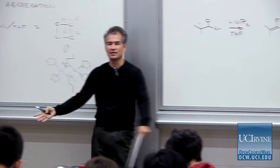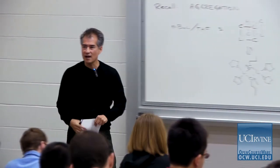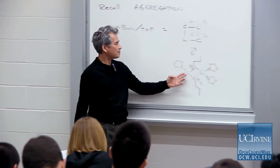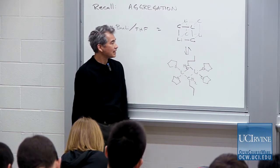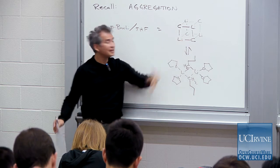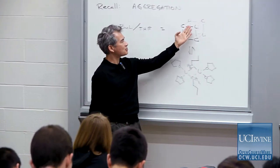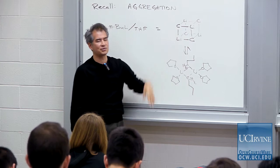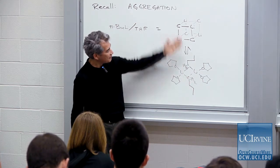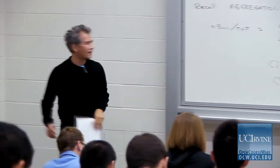They always aggregate in solution. They don't exist as monomers. Even in THF, which is a coordinating solvent, this demand of lithium for extra electrons causes it to do this weird stuff. So if you put butyllithium in THF, it adopts these cube-shaped structures. That's the structure of butyllithium in THF, and it's in equilibrium in THF with this dimeric form — not a cube, but a square.